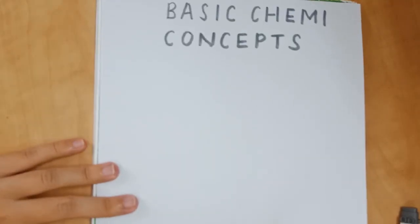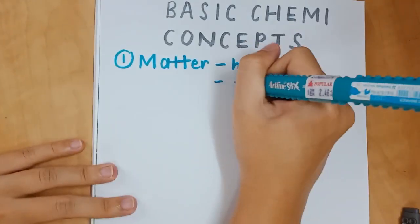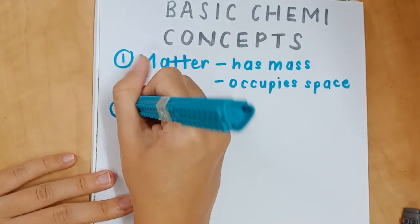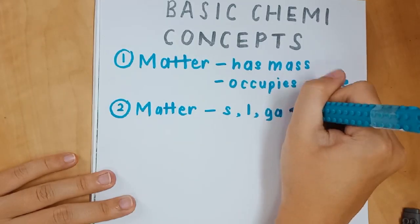We'll start with the first chemistry concept, which is very simple: What is matter? Matter is anything that has mass and occupies space. Matter is divided into three states: solid, liquid, and gas.